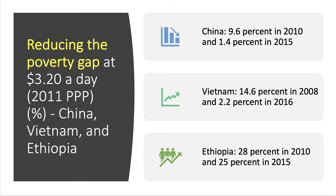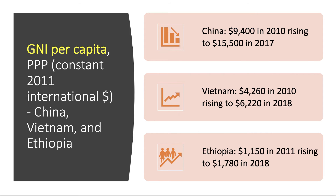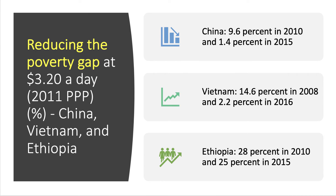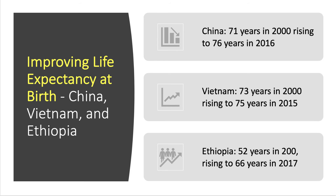Taking the World Bank measure of extreme poverty — people living on less than $3.20 a day at real 2011 prices, adjusted for purchasing power parity — China has made big progress in cutting extreme poverty; by this measure it's now less than 2%. Vietnam has made huge progress over the last ten years or so. Ethiopia less so — per capita incomes are under $2,000, so a higher percentage of the population is still living on less than $3.20 a day, but they are starting to make progress and have made bigger progress using the $1.90 a day benchmark.